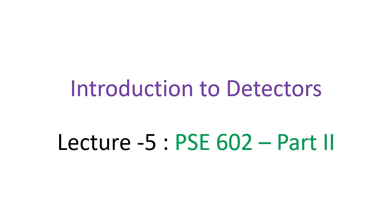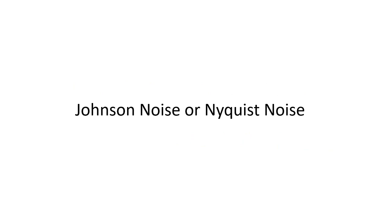In the previous lecture, we had looked at a fundamental source of noise that is shot noise. We are going to look at another very fundamental source of noise which is called the Johnson noise. This noise again arises out of thermal fluctuations. This is also known as the Johnson noise or the Nyquist noise.